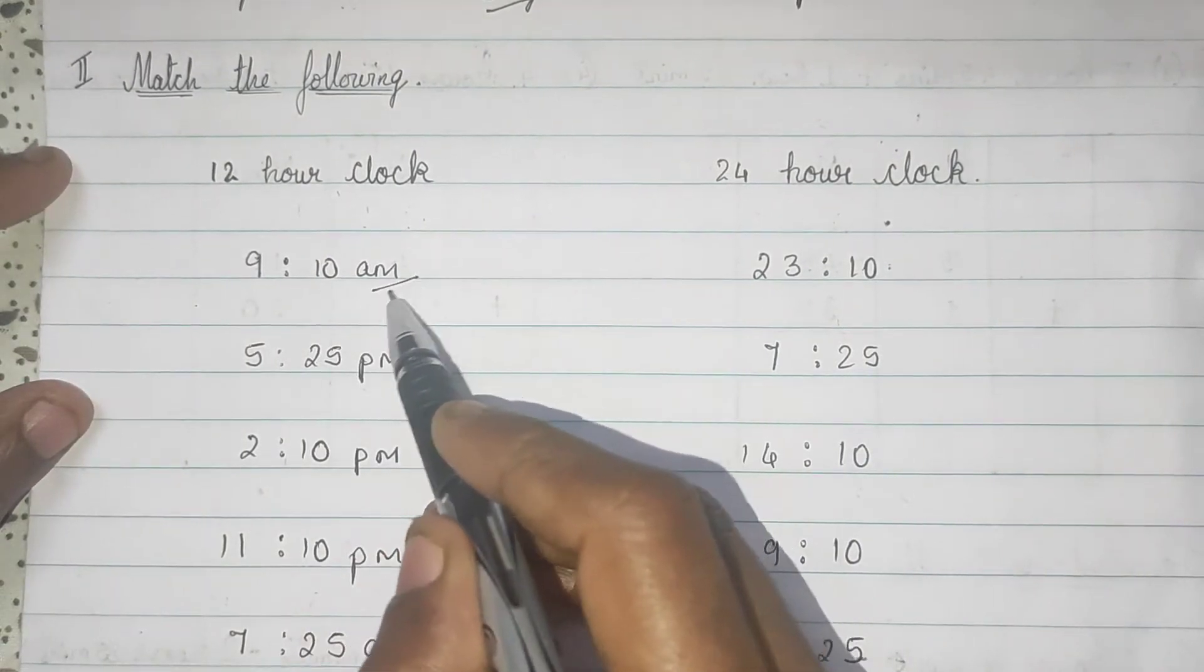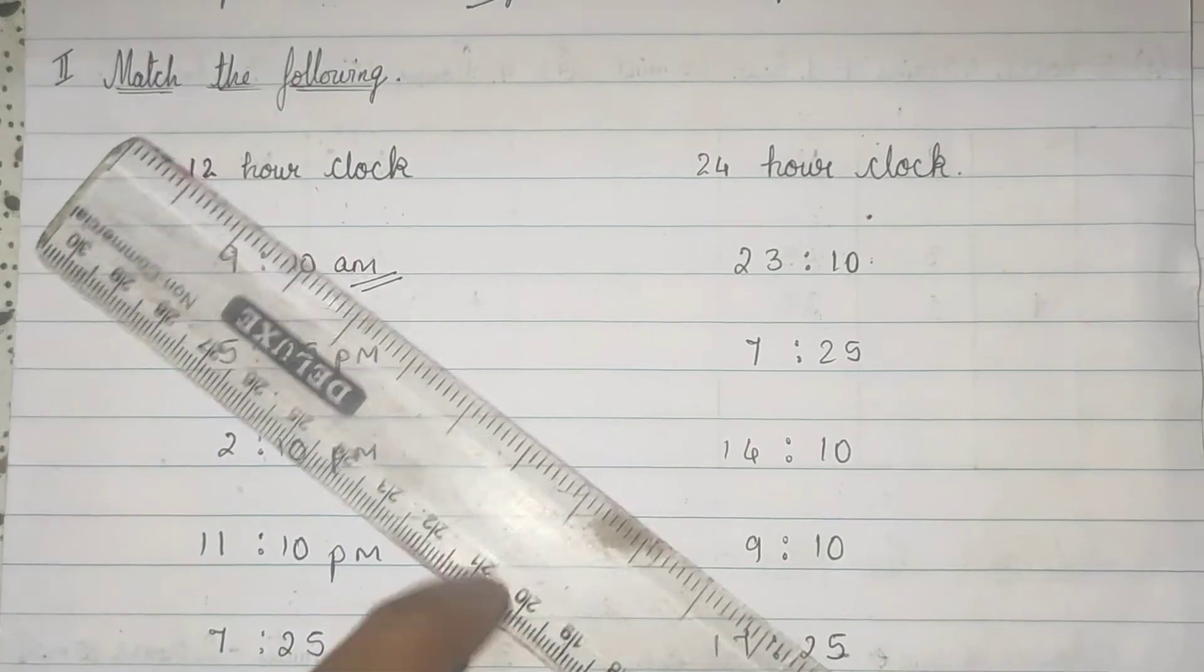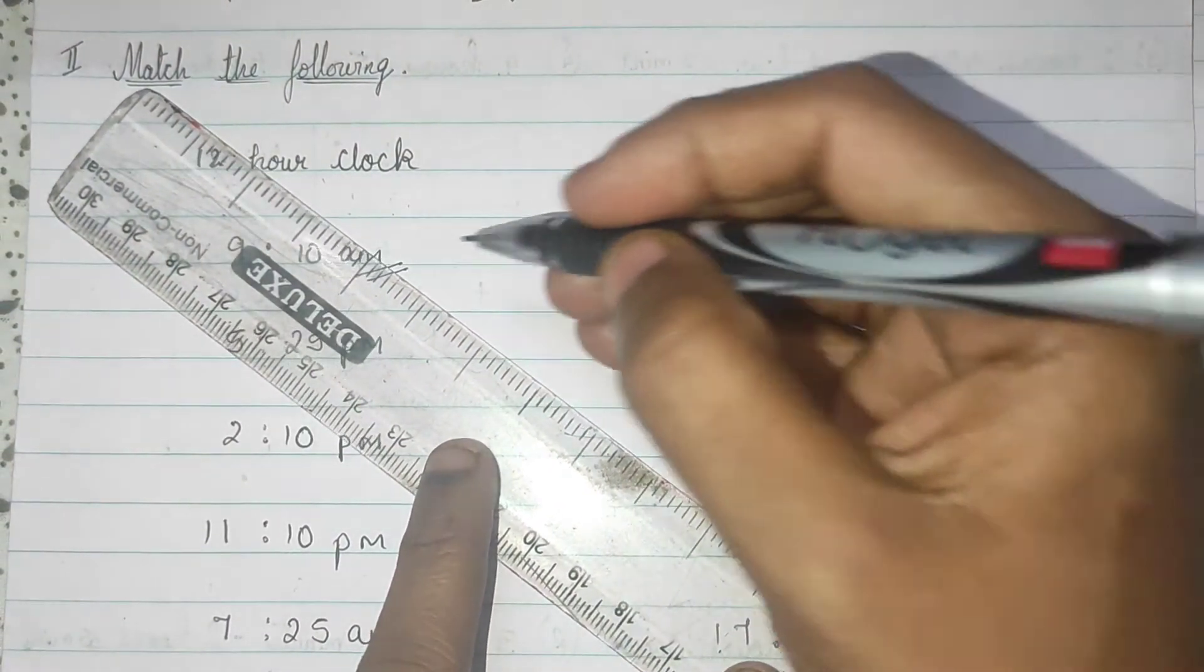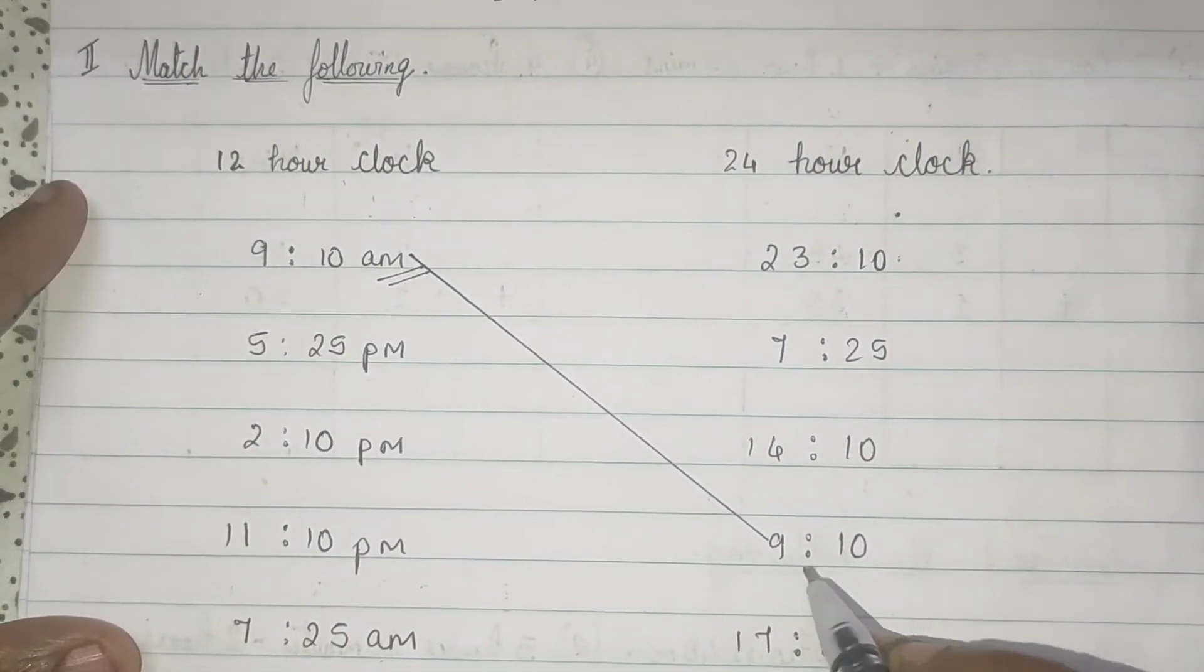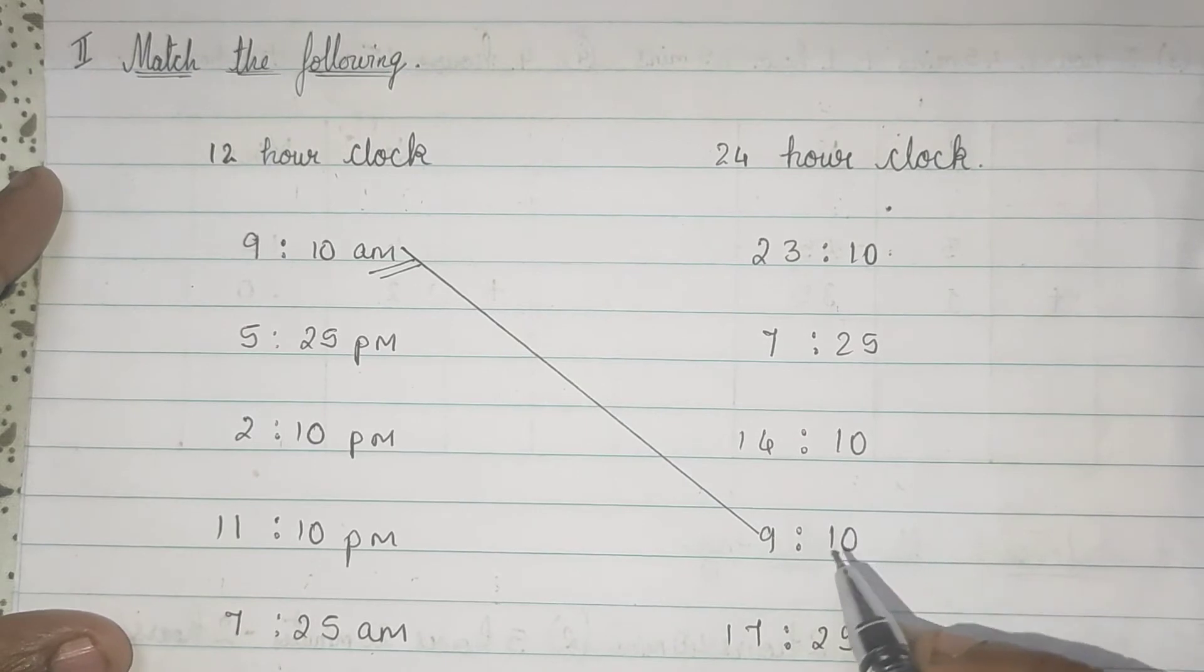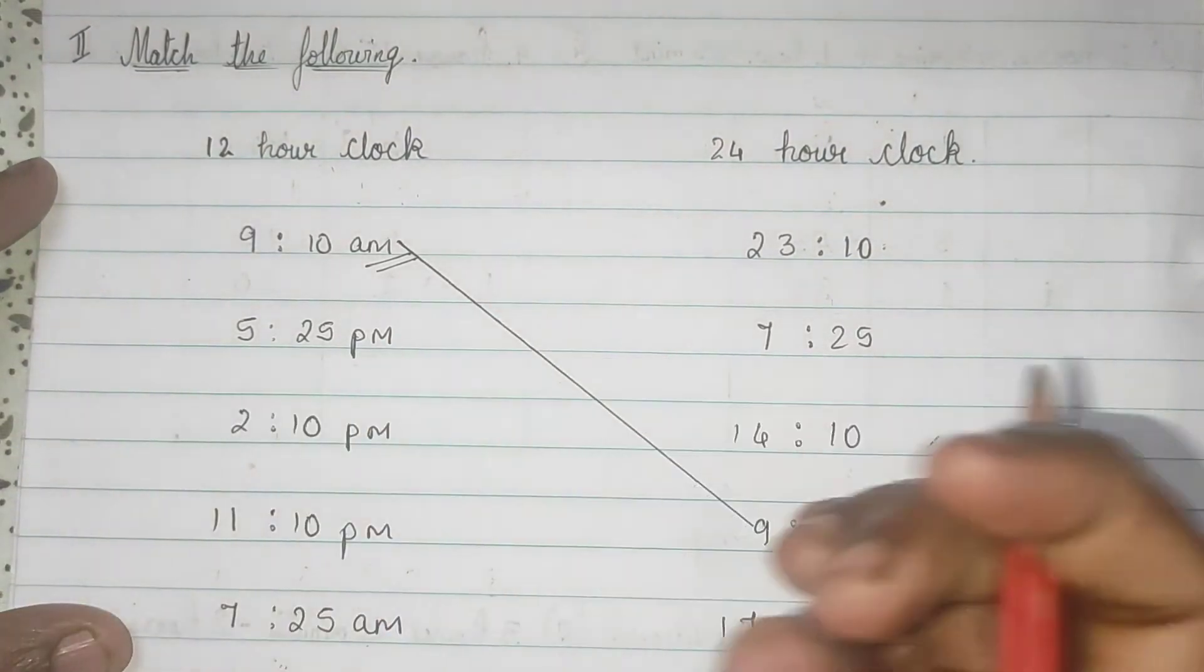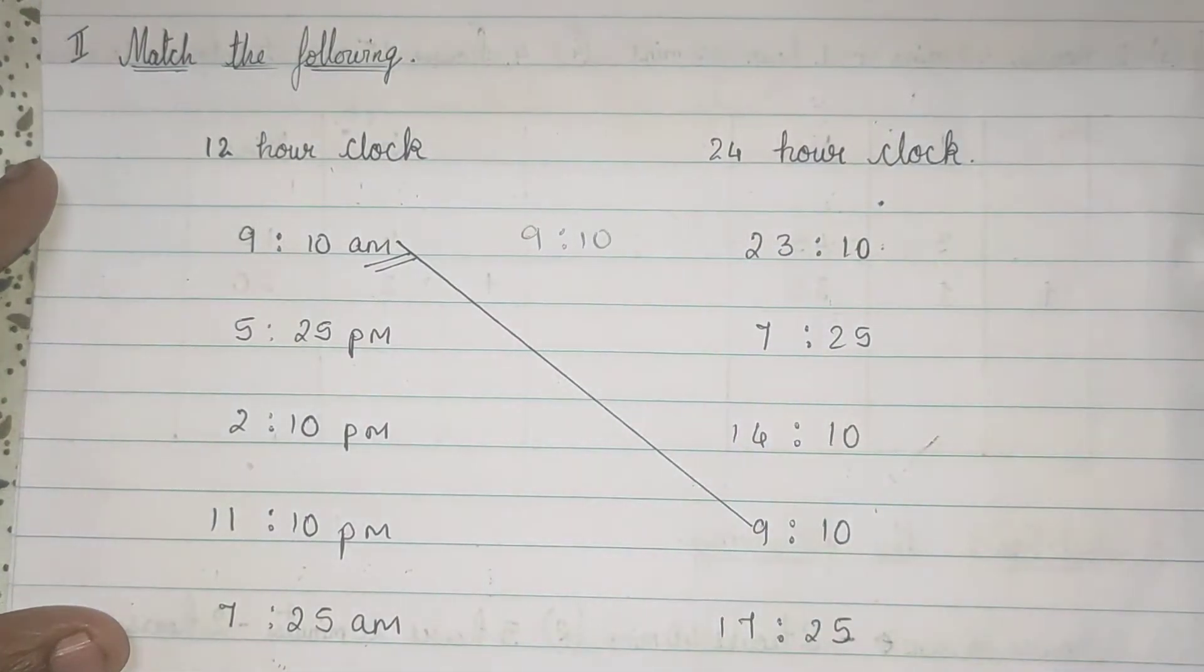See, 9, 10 a.m. Matlab yeh subha ka hai. So, in morning, it will be 9, 10 only. So, this and this. Okay? Either you do like this, match the following, or you have to write the same over here. 9, 10 like this.